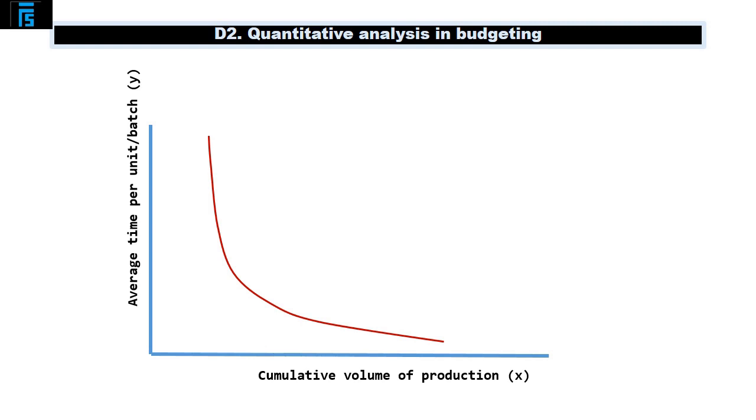This decrease in time taken is called the learning curve effect and it can be demonstrated in graphical form as seen here, where the vertical axis is the time taken to make each unit or batch and the horizontal axis is the volume of production. As the volume produced increases the time taken per unit or batch drops, initially quite quickly and then slowing as the effect of the learning curve effect starts to diminish. Once the workforce are up to their optimum speed, the labour cost per unit will plateau as they spend, on average, the same amount of time on each unit or batch, as can be seen on the graph.